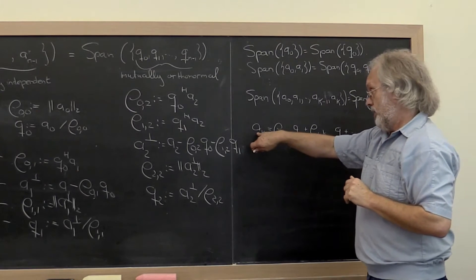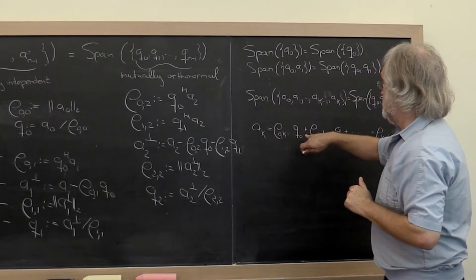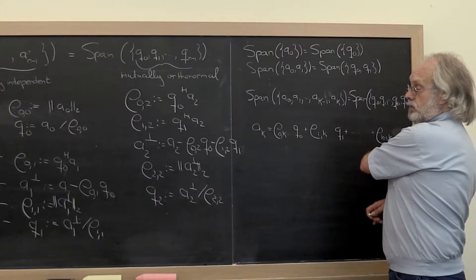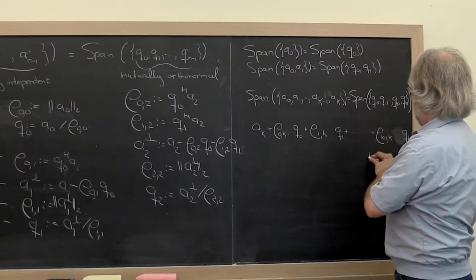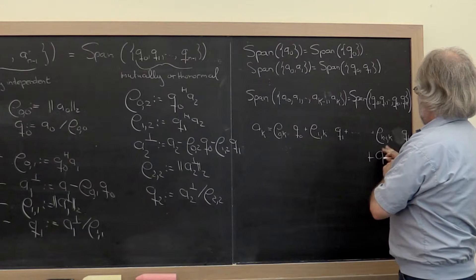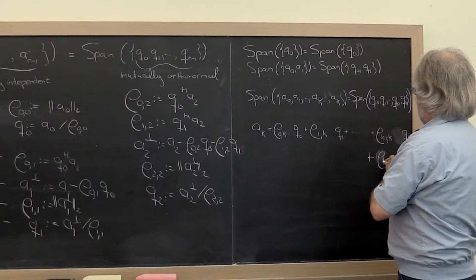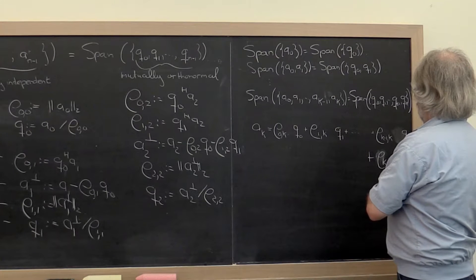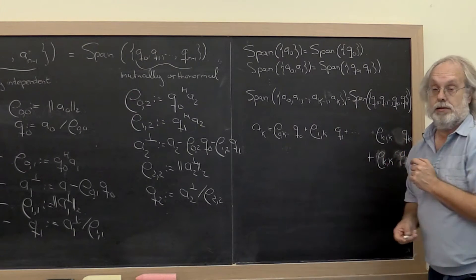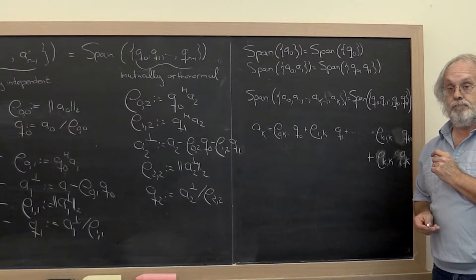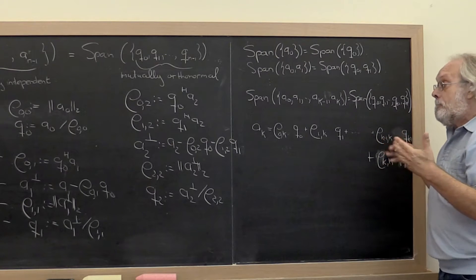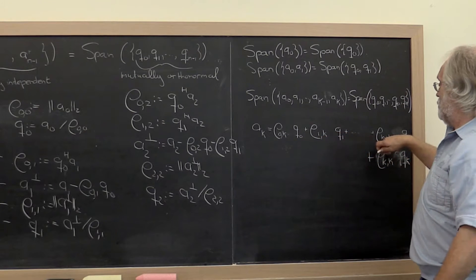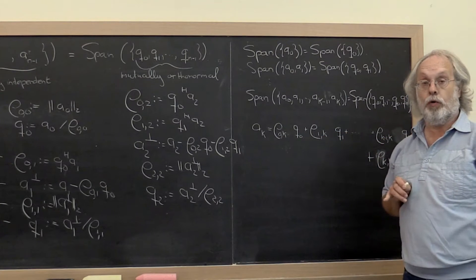So Ak can be written as a linear combination of Q0 through Qk minus 1, plus rho kk times Qk. Obviously I picked how I chose to label my coefficients carefully.